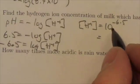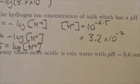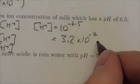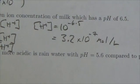That's what they want. 3.2 times 10 to the negative 7, and if you want to finish this off, add the units: moles per liter.